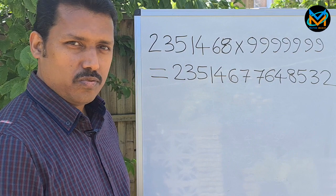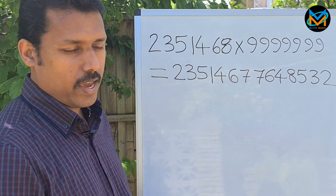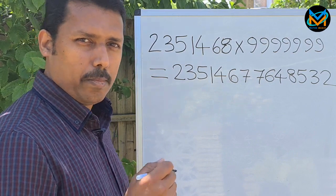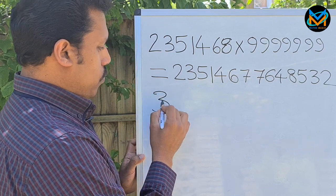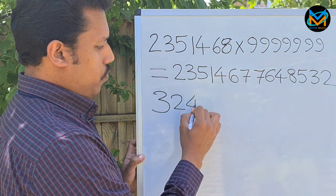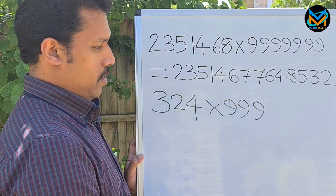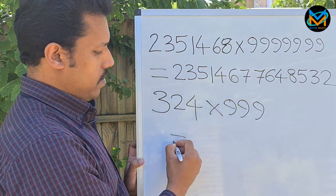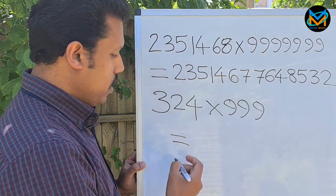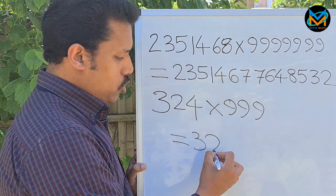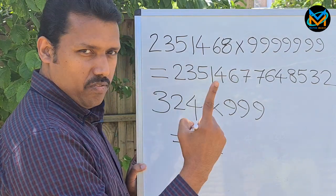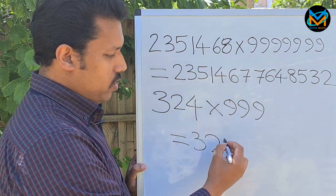Let's start with some small numbers first: 324 times 999. So there are three numbers, three nines. The trick is I'll do 323, then you take away one from it. So what is four minus one? Three.